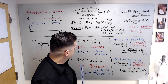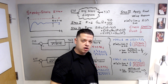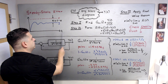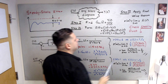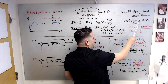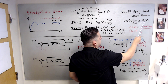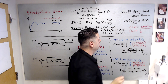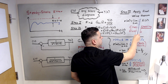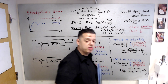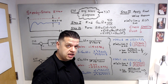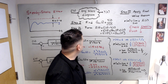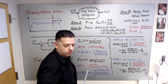Step three: apply the Final Value Theorem. The steady-state error e(∞) equals the limit as s goes to zero of s times E(s). Just calculate this limit. One common mistake — don't forget the s multiplier out front; that comes from the Final Value Theorem. And that's it — here is your steady-state error with three steps that you can apply to any block diagram configuration.